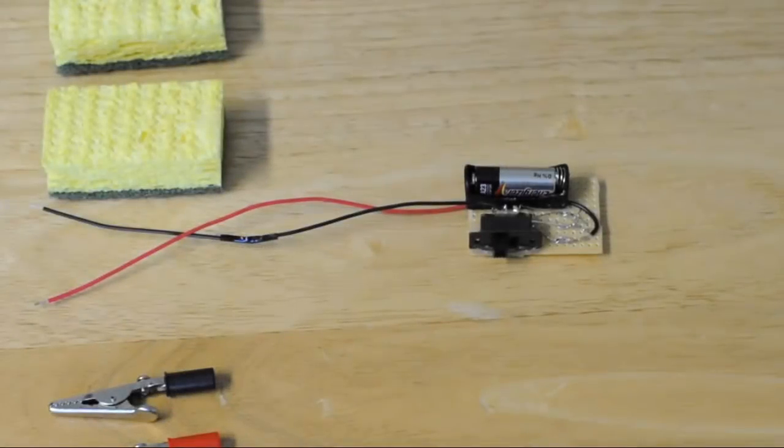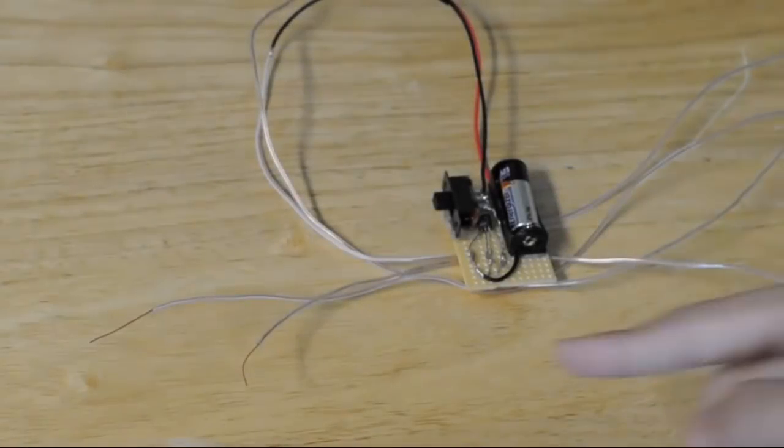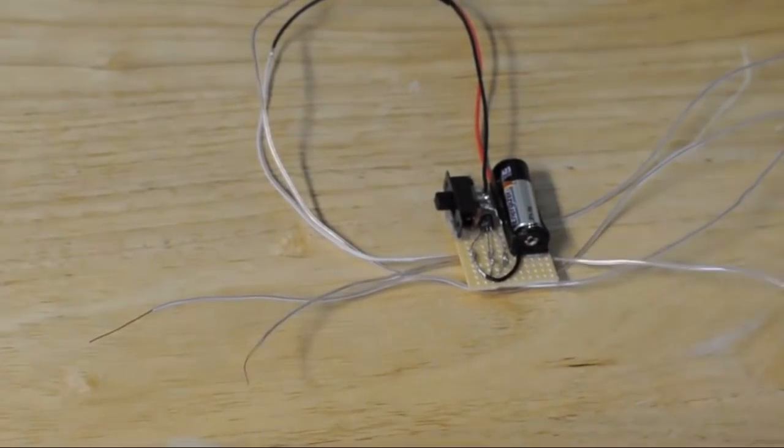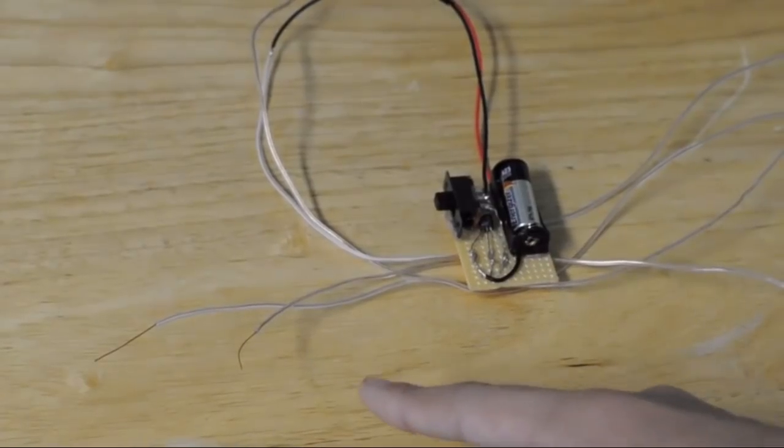Okay, now it's time to connect the device to the sponges by using alligator clips. But first, we need to make the wire longer so it can reach our head from somewhere such as your pocket. So we're going to attach a long piece of copper wire to both the positive and the negative wires. Now that you've extended your wires, use wire strippers to strip the ends of these two wires so that they can be connected to alligator clips.